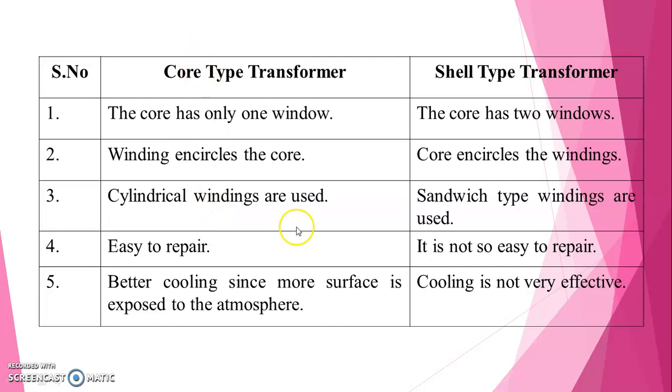It is easy to repair for core type transformer. It is not so easy to repair for shell type transformer. Better cooling since more surface is exposed to the atmosphere for core type. Cooling is not very effective for shell type.